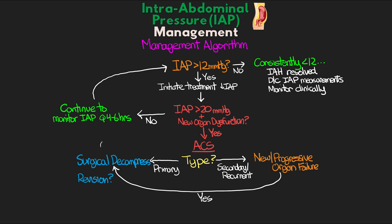Once either the surgical decompression is performed, or if the patient has secondary or recurrent ACS and there's not progressive organ failure, then we would continue our medical interventions to reduce intra-abdominal pressure and continue to monitor serial intra-abdominal pressure measurements. If the patient's intra-abdominal pressure is consistently below 12, then we would consider the intra-abdominal hypertension resolved and discontinue measurements. If it remains above 12, we continue to check if it rises greater than 20 and monitor for any new organ dysfunction. If so, we move back up the algorithm and repeat this process.